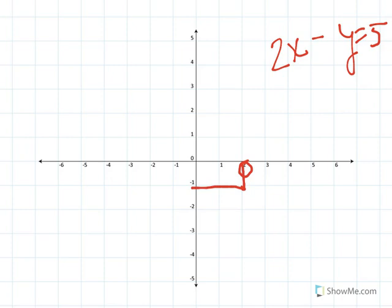What if x is 6? If x is 6, then what will y be? y will be 2 times 6 is 12. 12 minus 7 is 5. So y is 7.